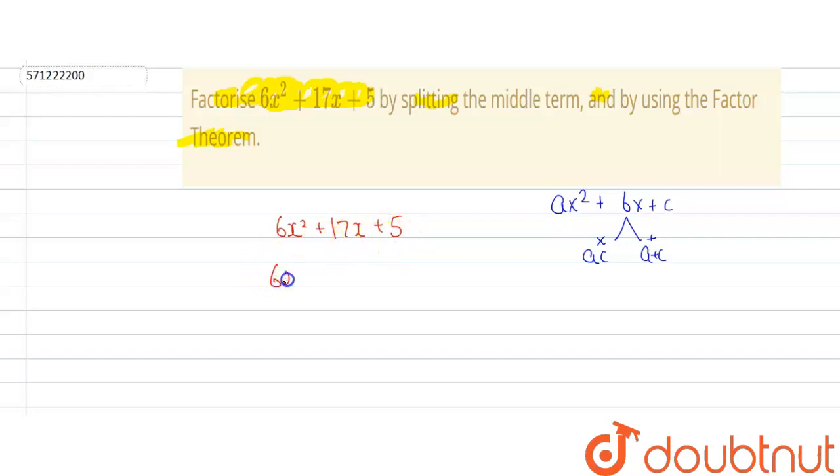So we will get answer as 6x squared plus 2x plus 15x plus 5. Now what we will do is we will take 2x common from the first two terms. So we will get 3x plus 1 and by taking 5 common from the last two terms we will get 3x plus 1.